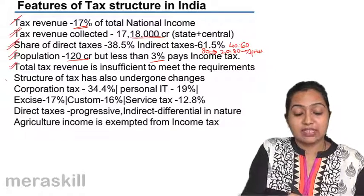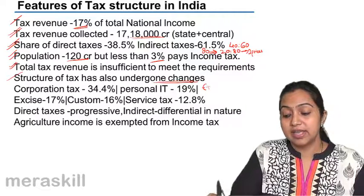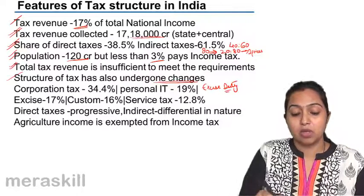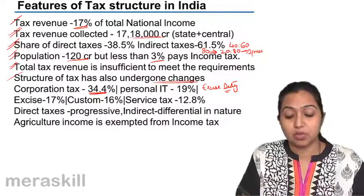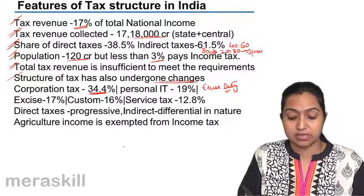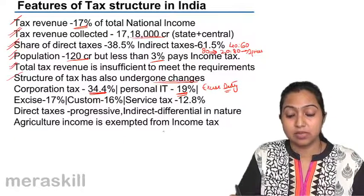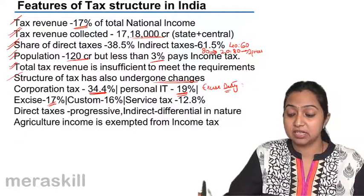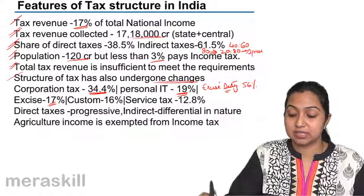The structure of tax has undergone a lot of change in the previous six decades. Earlier, excise duty was the main earner. But now, corporation tax provides nearly 34.4% of total tax, which shows that the corporate sector has grown over the years. Next is personal income tax, which contributes 19%. Excise still contributes around 17%, though it was nearly 56% earlier.